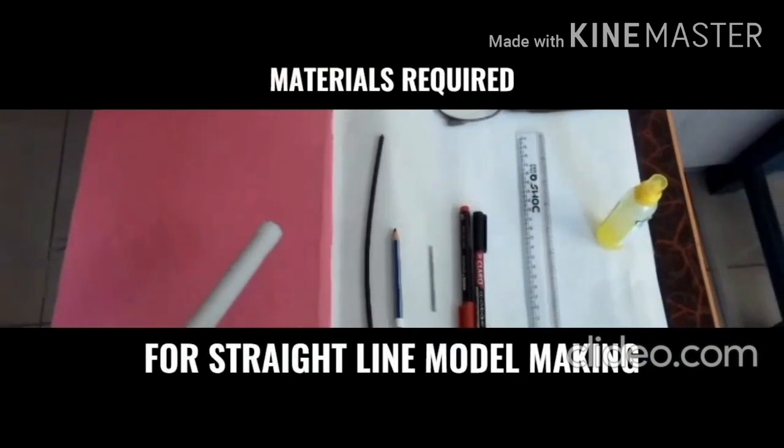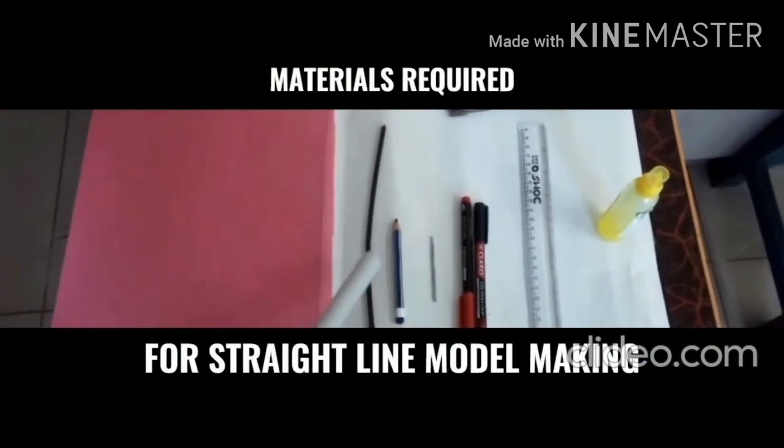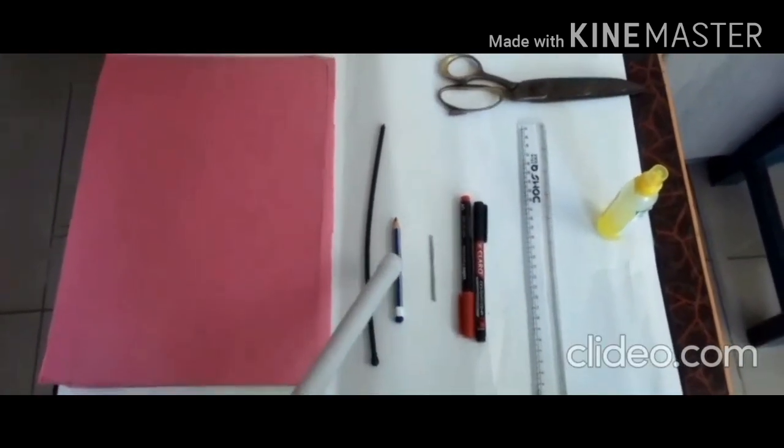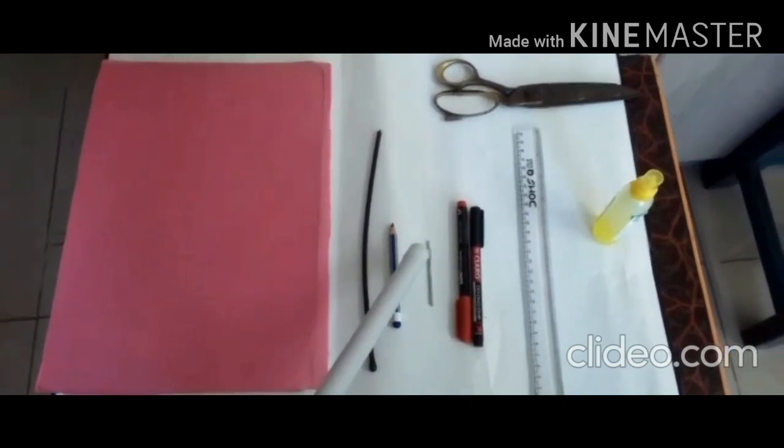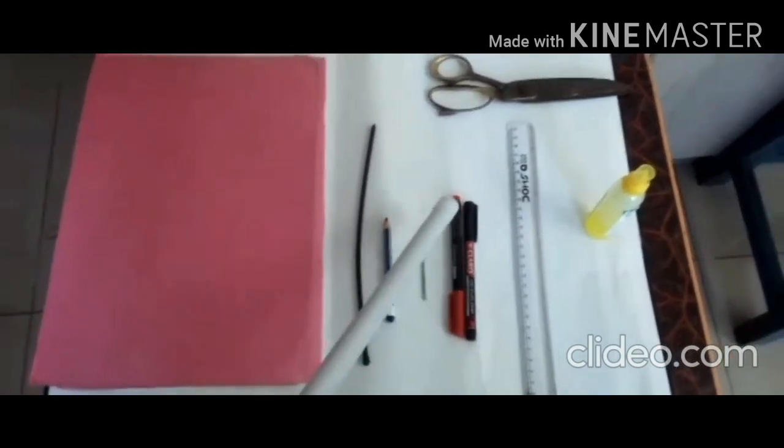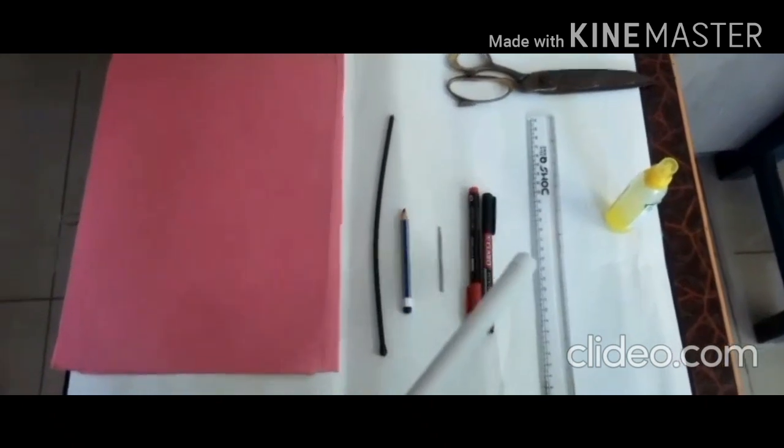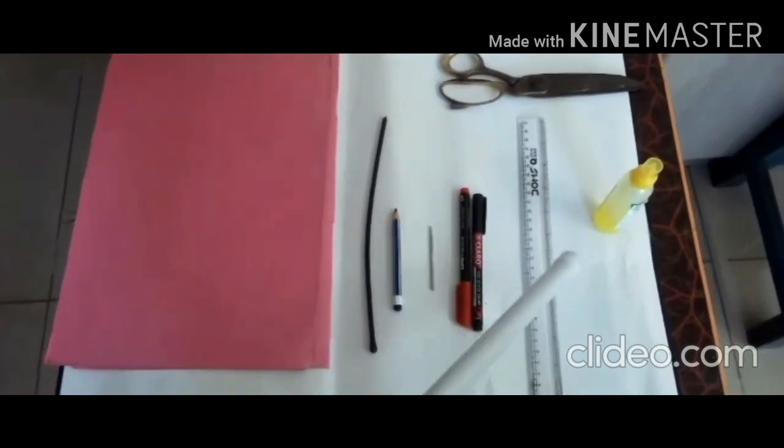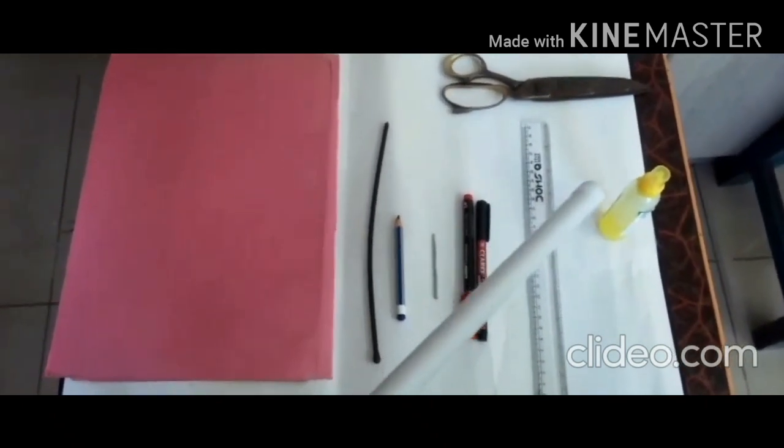What are the materials required for this model making activity? Cardboard sheets, plastic stick, pins or pencils, marker pen, scale or ruler, glue and scissors.